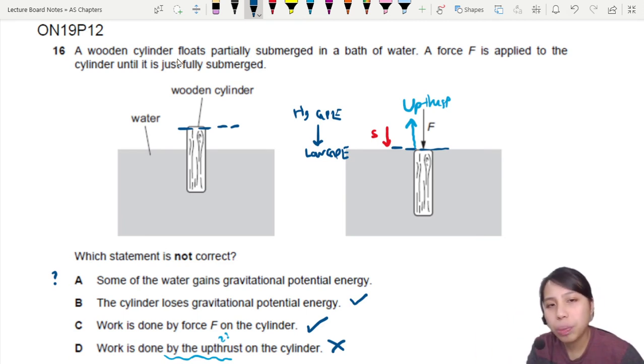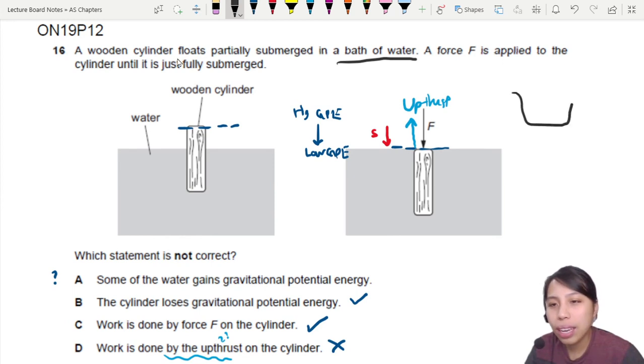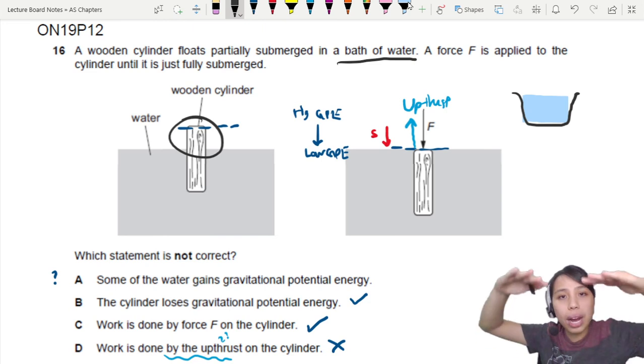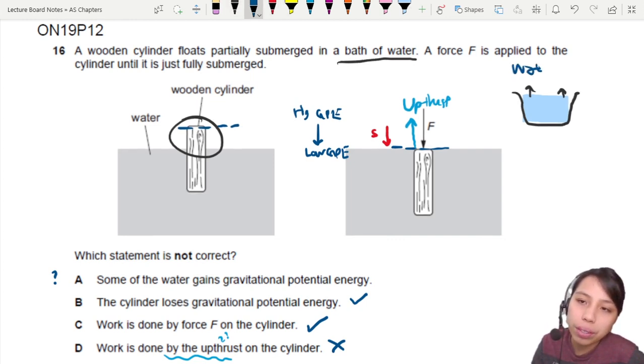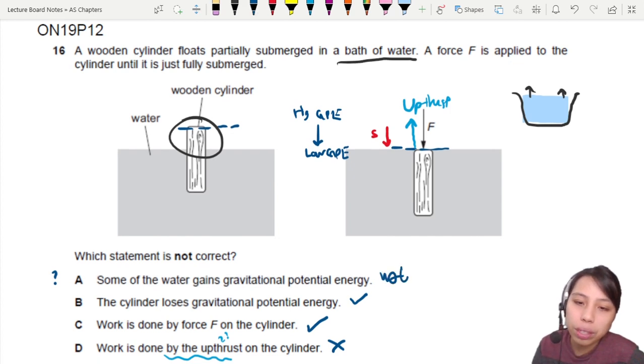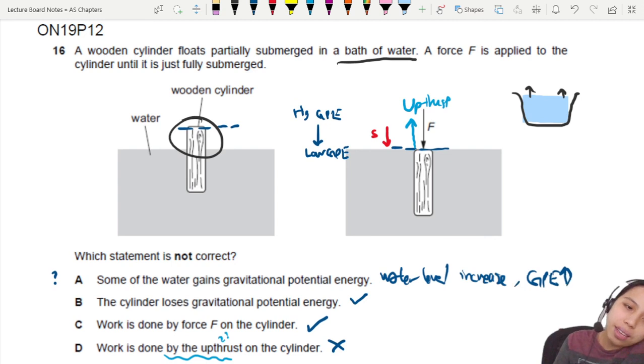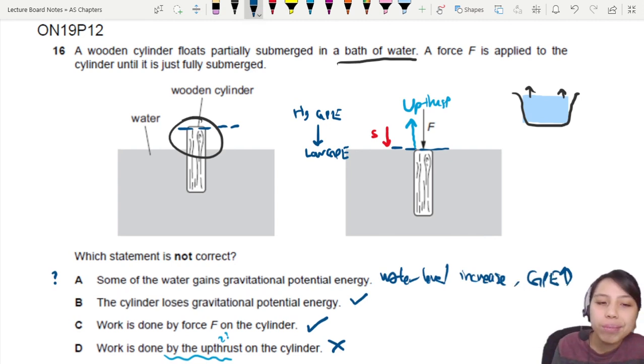Some of the water gains GPE. You are actually in a bath of water, in a container. If you push this volume into the water, the water will all go higher, right? The water level will increase slightly in the bath of water. So tricky. The water level will increase, so some of the water will have increased GPE. This one, although debatable, is still acceptable.